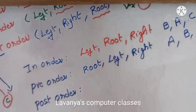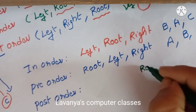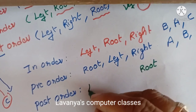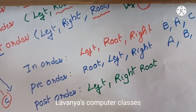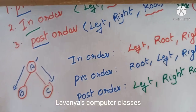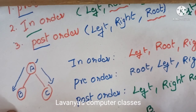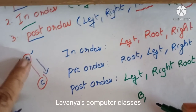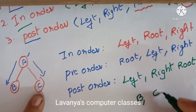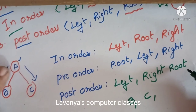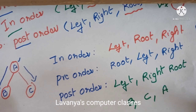For post-order: post means last, so root is visited last. First go to the left-hand side, which is B. Then the right-hand side, which is C. Then lastly visit the root, which is A. So post-order traversal gives B, C, A.